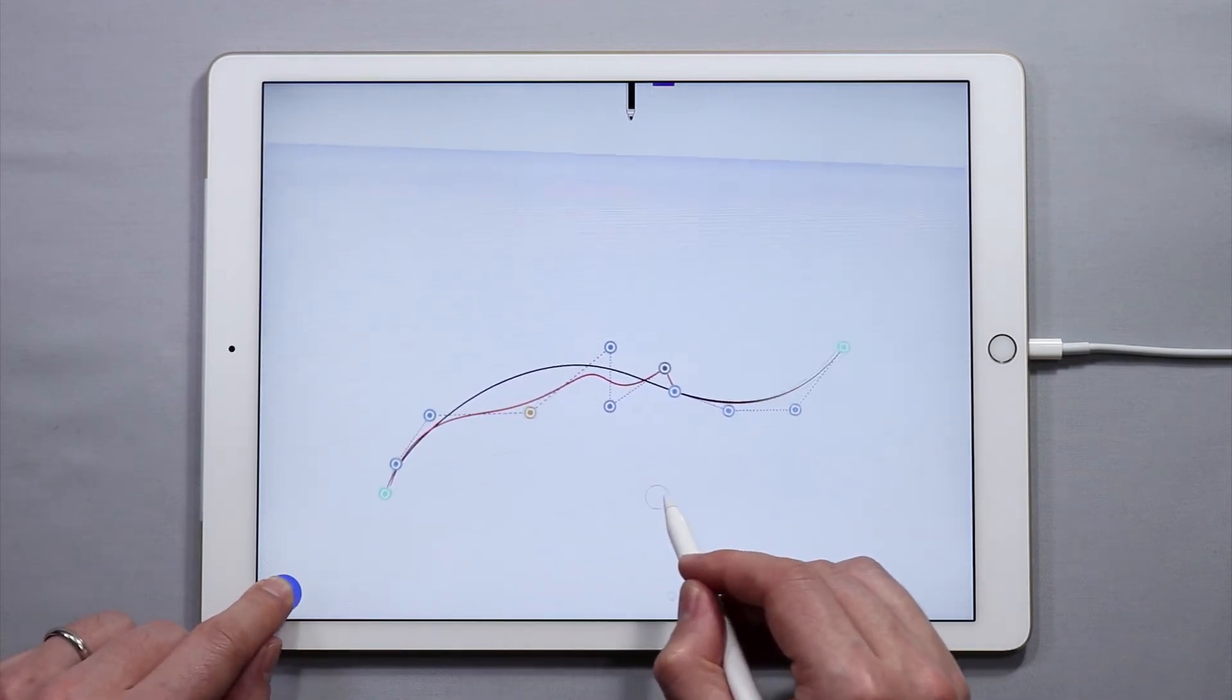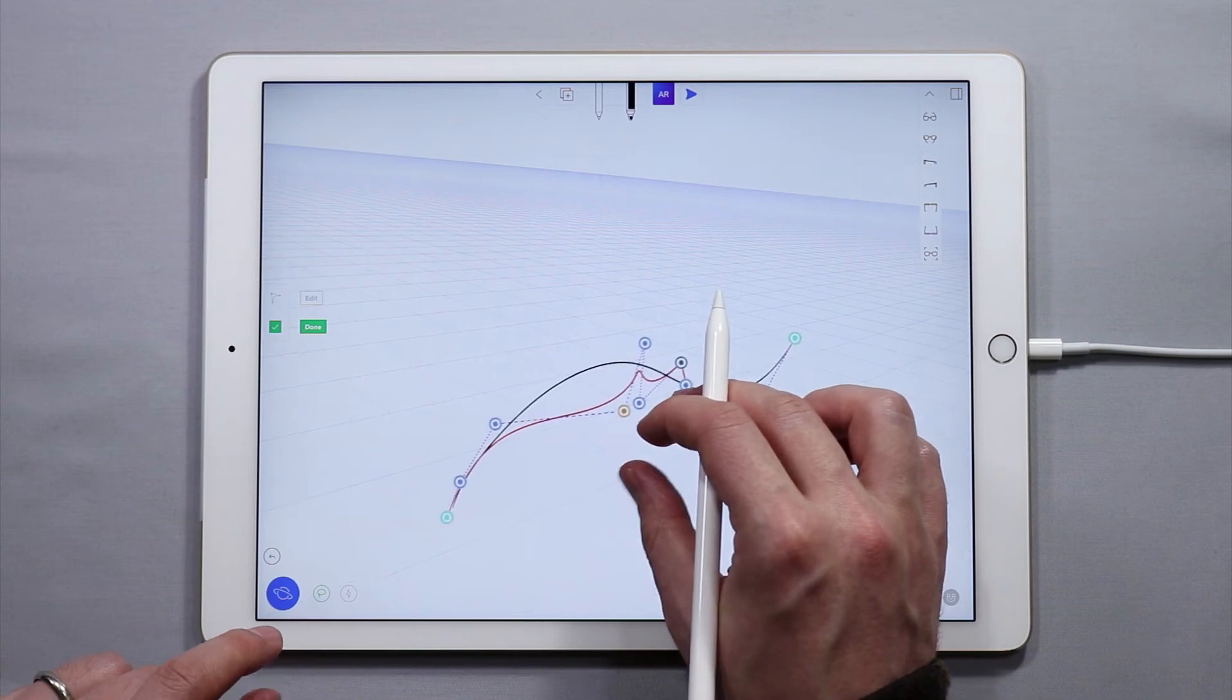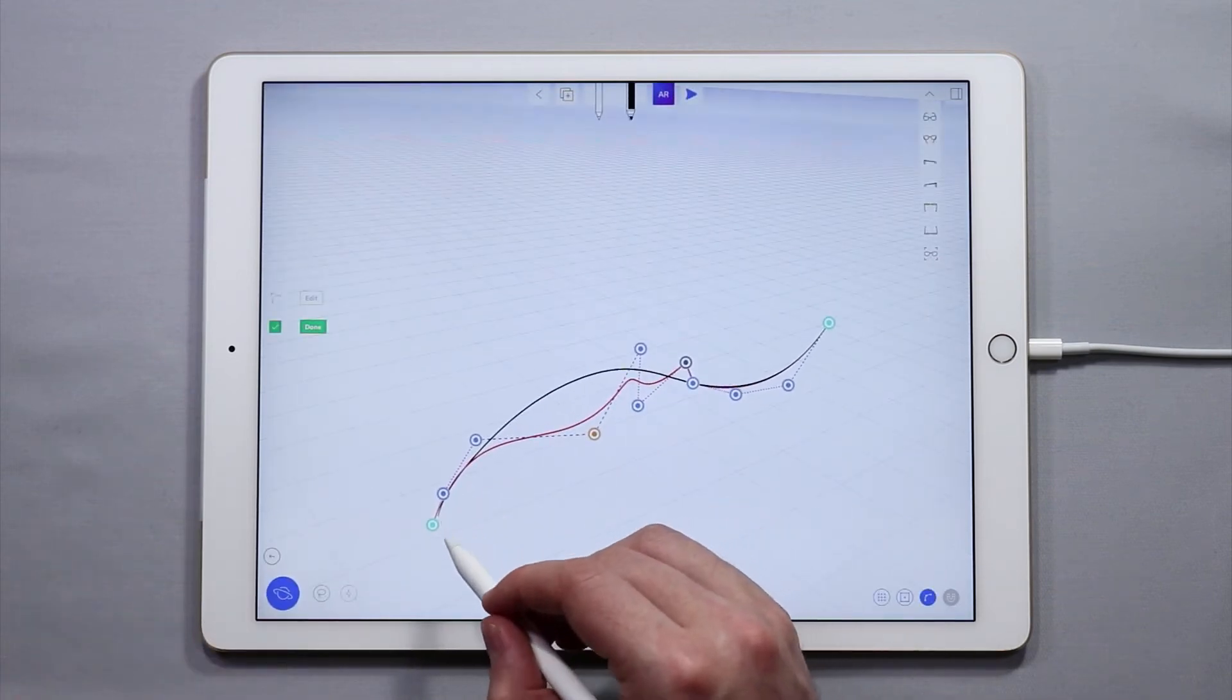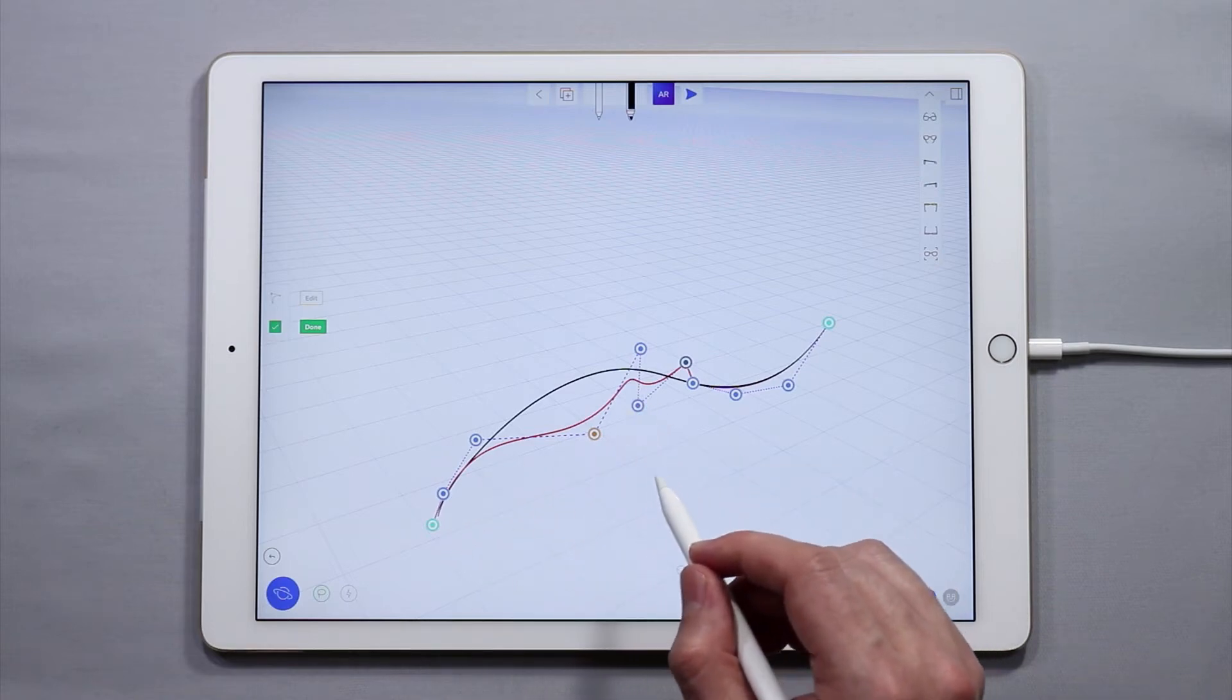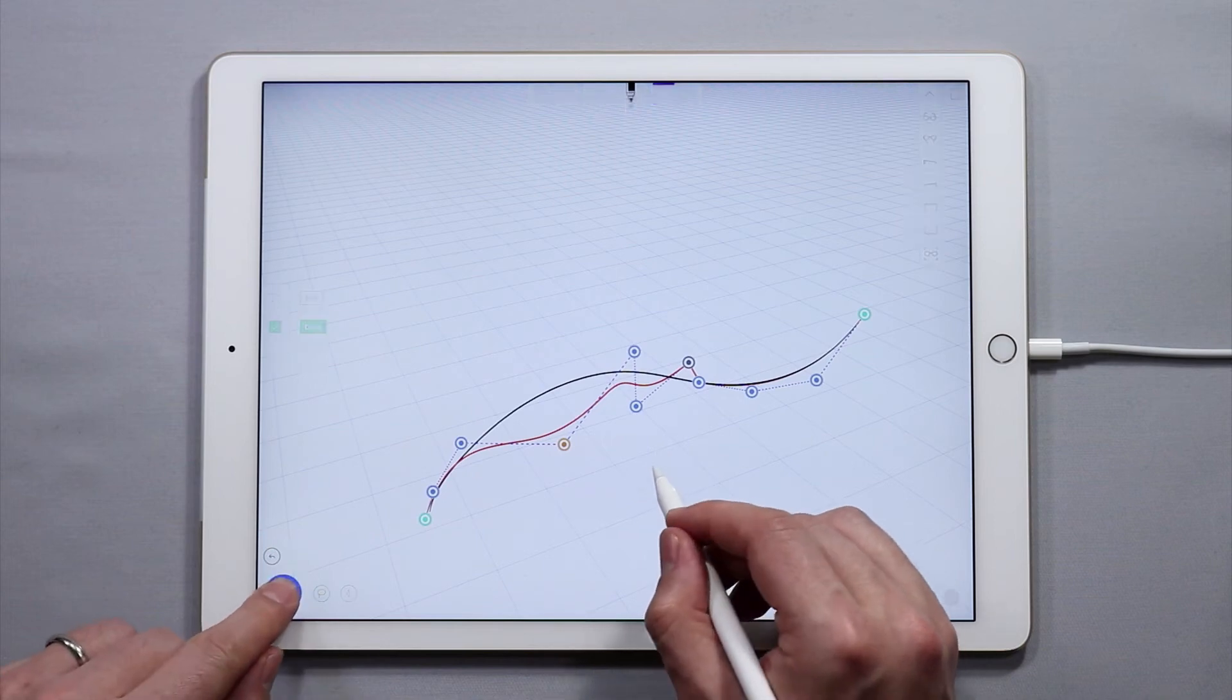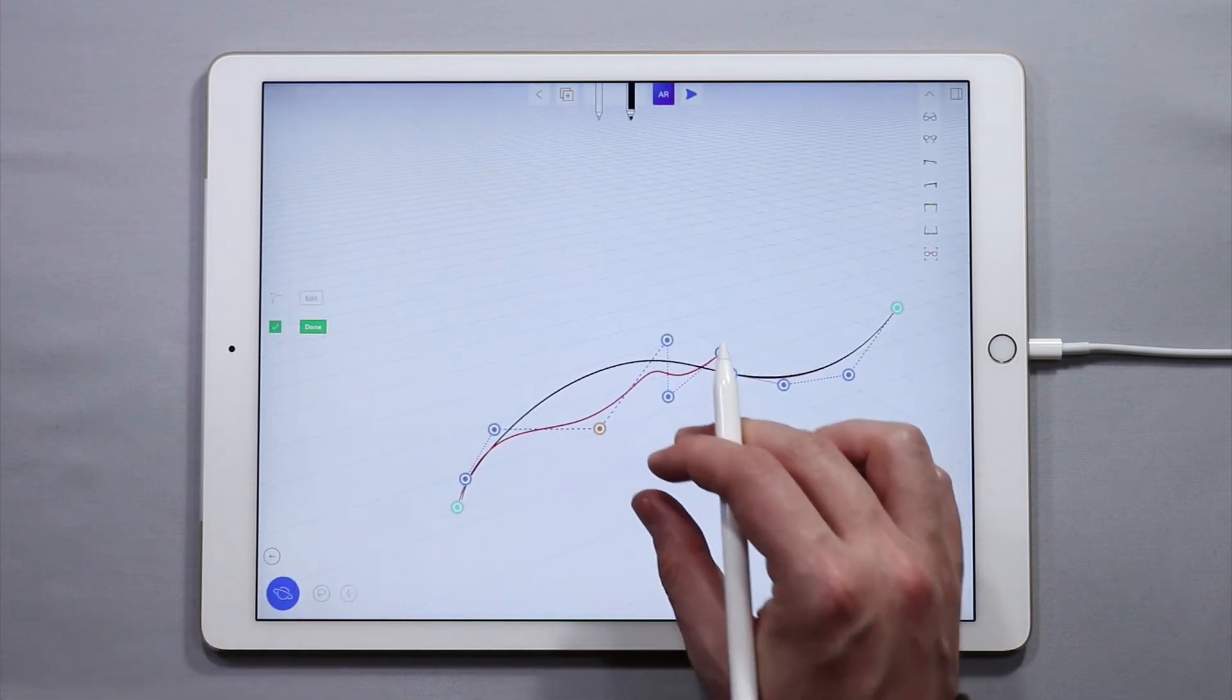In addition this is how most NURBS modeling software works. You're actually just moving points around in three dimensional space and those points dictate the shape of a curve. So learning how to do this in UMake will enable you to do it in other programs like Rhino or Alias.